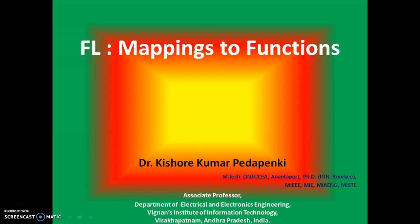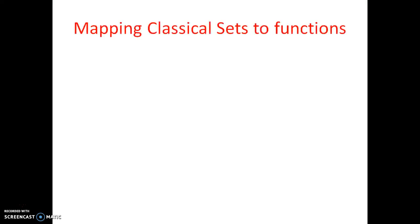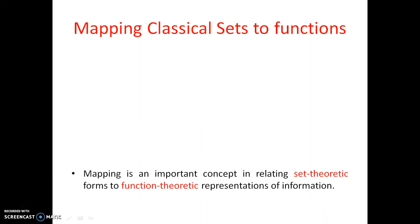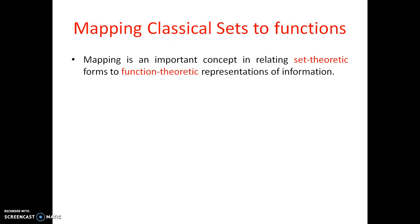In this video, let us discuss mappings to functions — how sets are mapped to functions. There are two types: classical sets and fuzzy sets. We will clearly identify what membership is, what fuzzy sets are, and how they differ from classical sets based on mappings to functions. This is a very important concept as it relates set theory to functional theoretical representation.